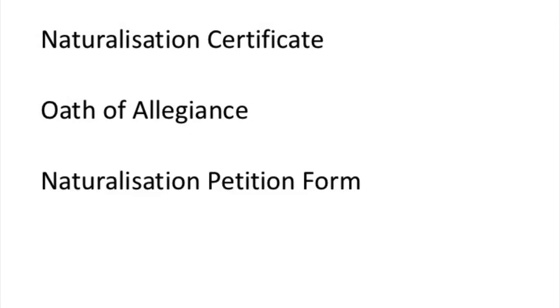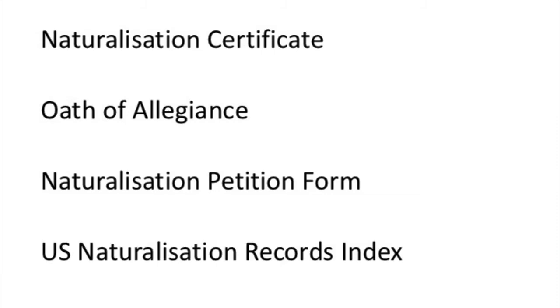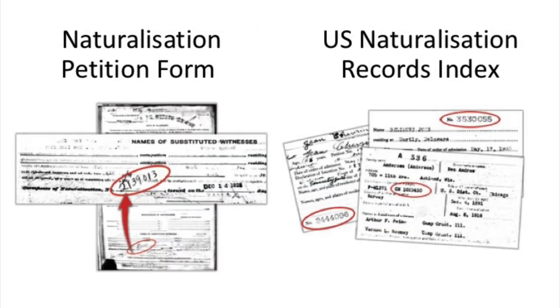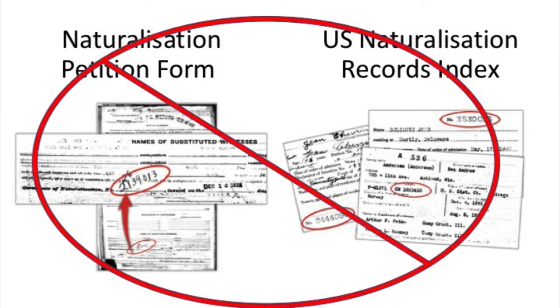You can find the C file number in a few places: one, the naturalization certificate itself; two, the oath of allegiance; three, the naturalization petition form; and four, the U.S. Naturalization Records Index. I won't go into detail about these last two — the petition for naturalization and the U.S. Naturalization Records Index — because these are less reliable and slightly more confusing ways to find the C file number.